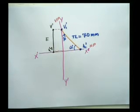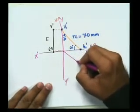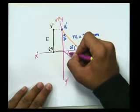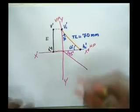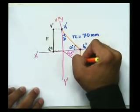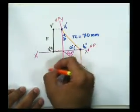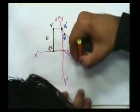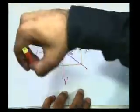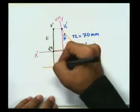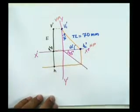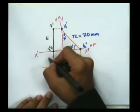For getting the plan, I have to draw a line at 45 degrees from here. Now, extending this line below and then exactly perpendicular to it, I will draw a straight line. It is visible to you now.